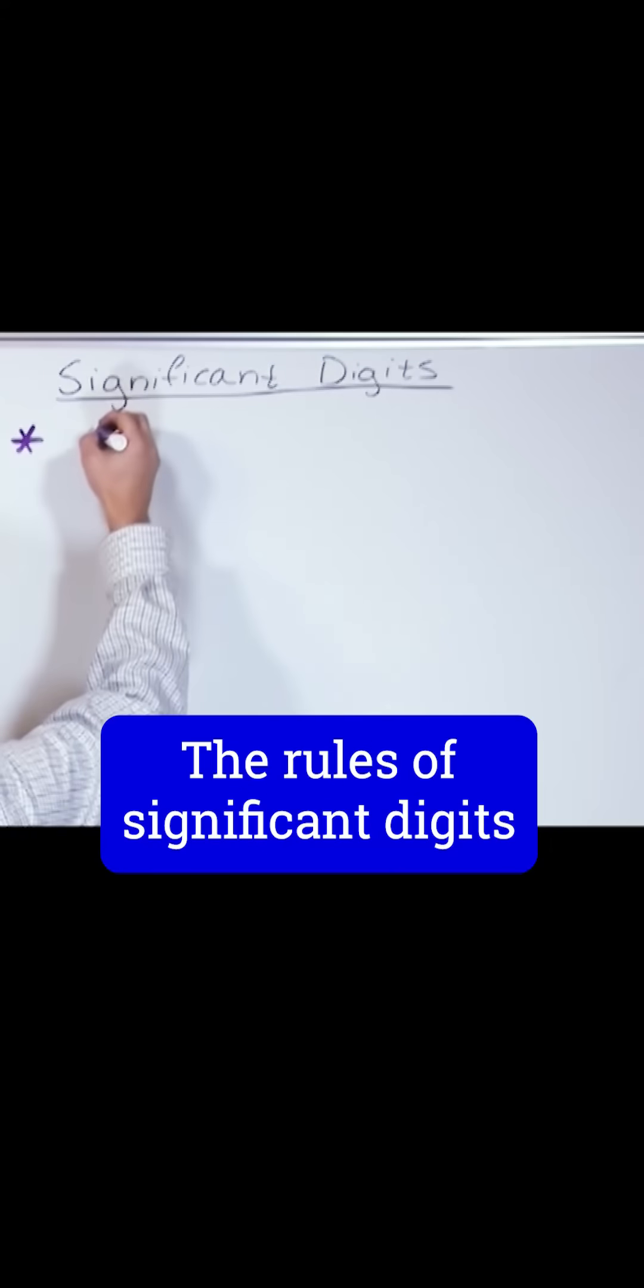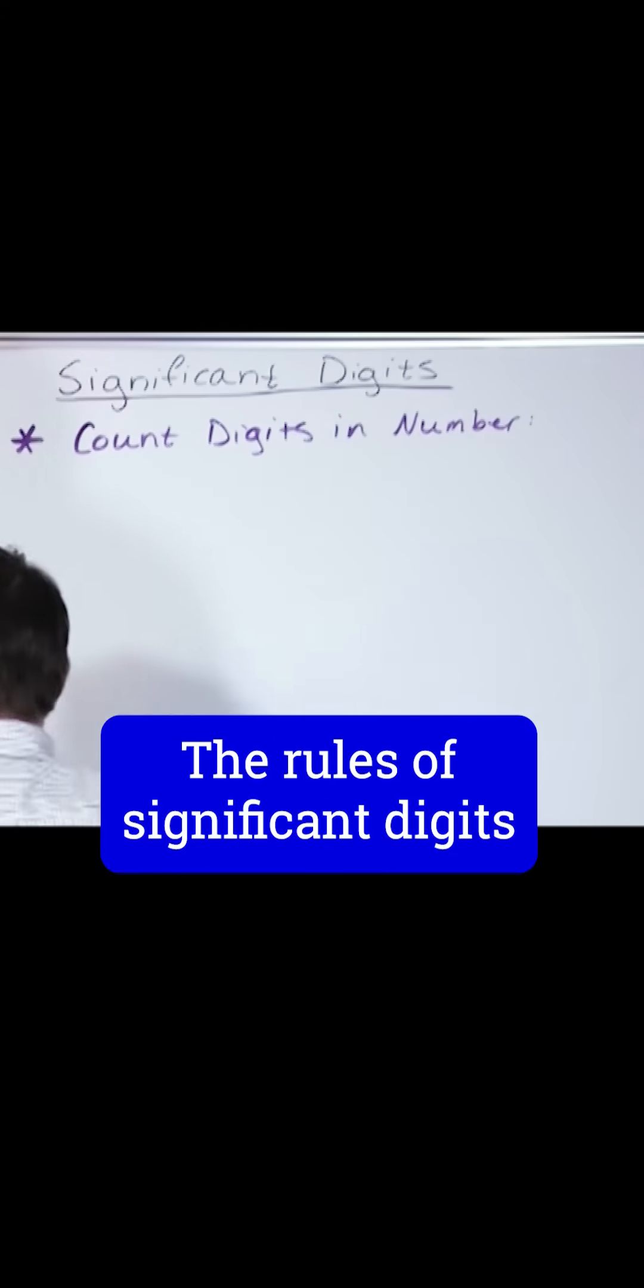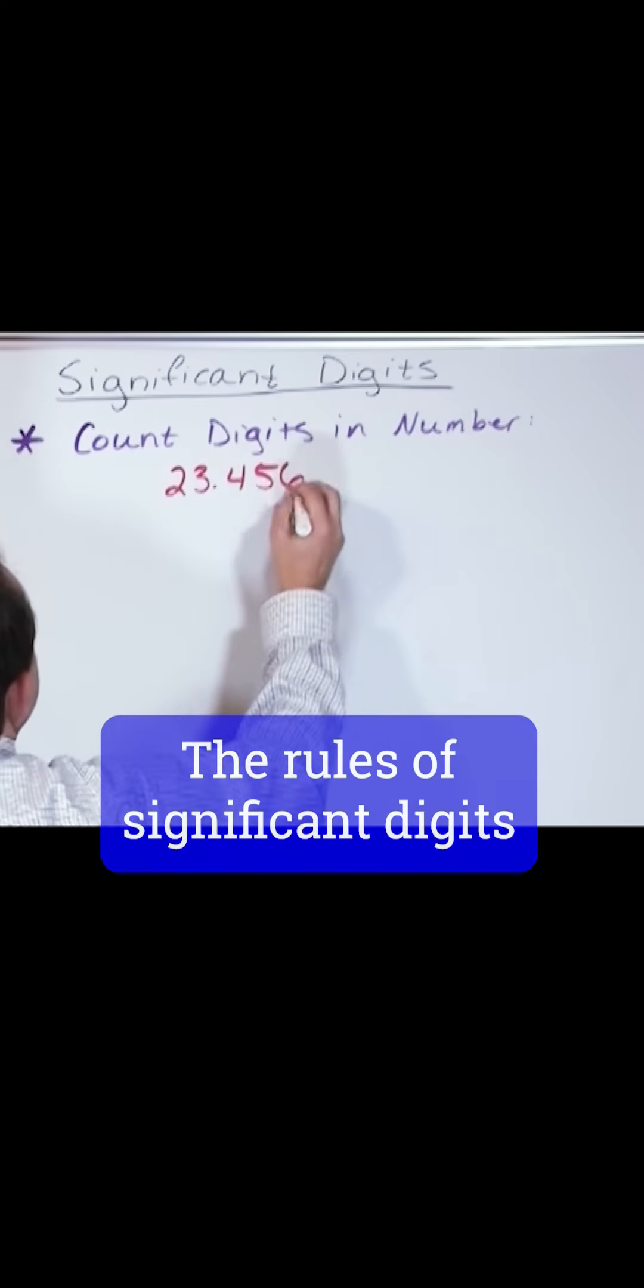The first thing that you should really be doing is you count the digits in the number. So let me give you an example of that. Let's say we had the number 23.456.